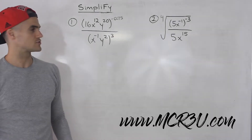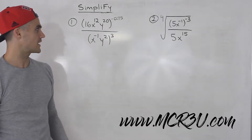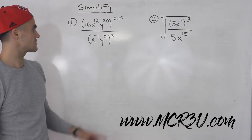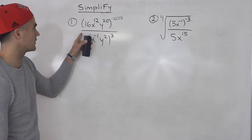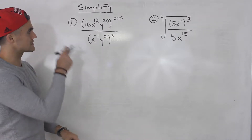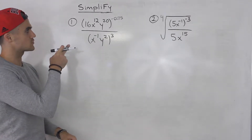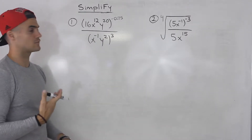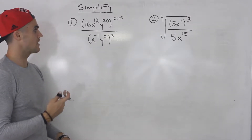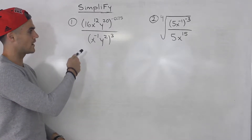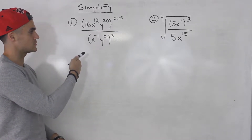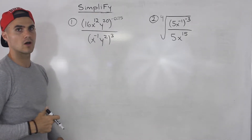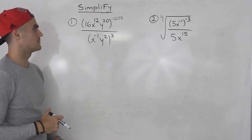Welcome back. Moving on to more exponential expressions to simplify. Starting with number one, we have 16 x to the 12 y to the 20, to the power of negative 0.75, all over x to the negative 1 y to the power of 2, all to the power of 3.